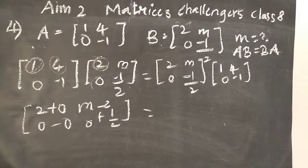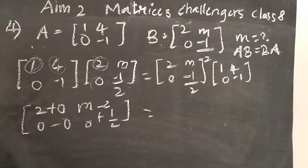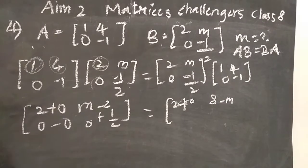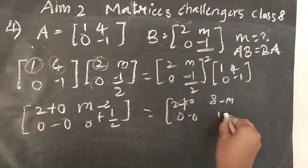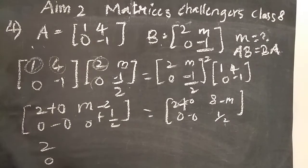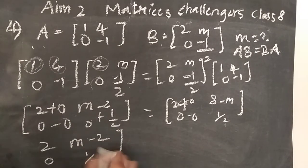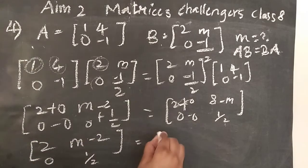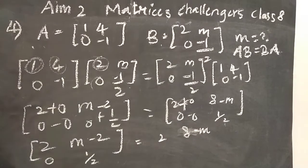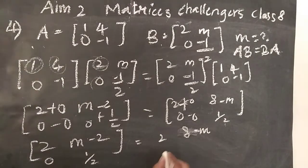Equal to, now here also you have to multiply. What you are going to get? 2 plus 0, 8 minus M, and 0 minus 0 half. This is what we will get now. 2 plus 0, M minus 2 half, equal to 2, 8 minus M, 8 minus M, 0 minus 0 is 0 only, 0 half.